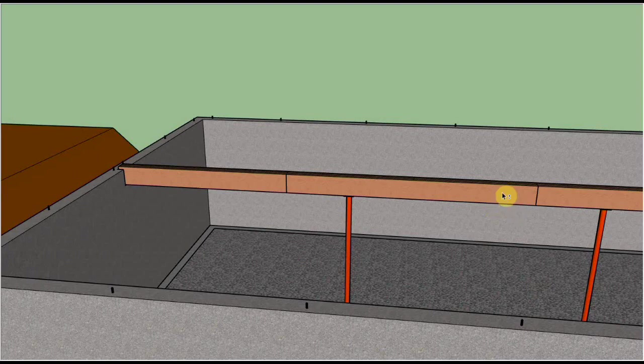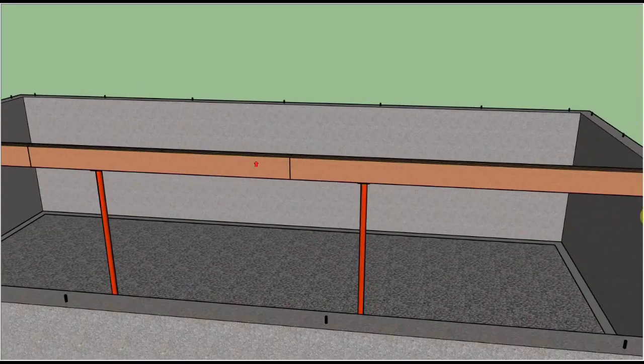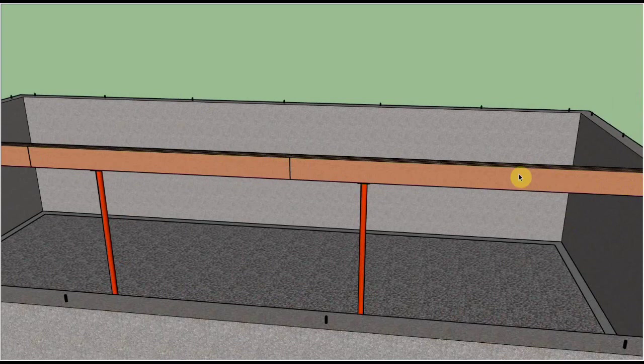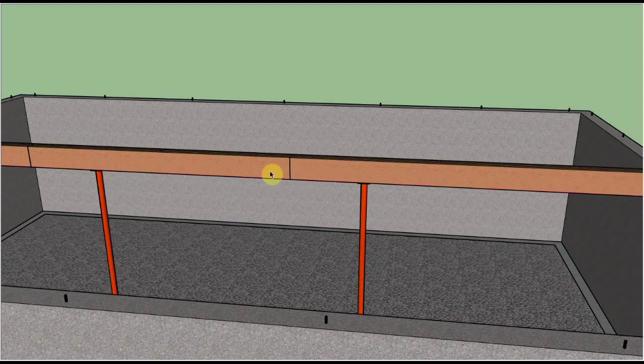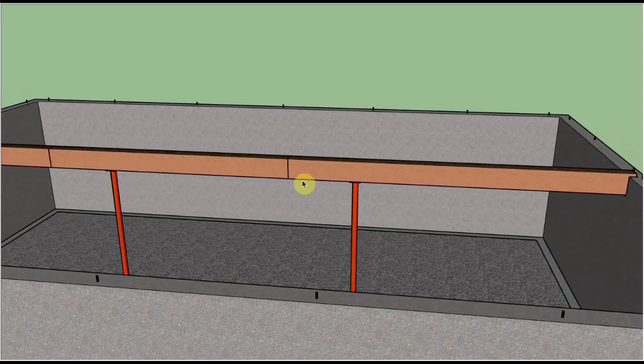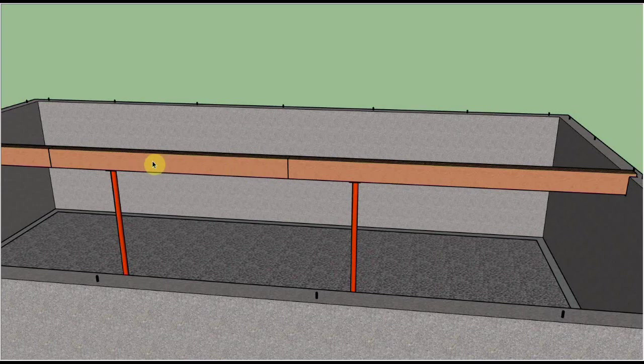The joints have to be on what are called the interior quarter points. In this first span we don't have any joints, and then the two by twelve cantilevers past the support to the interior quarter point. That short cantilever supports this longer piece that's extending over the other column.